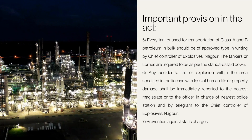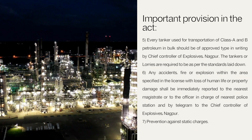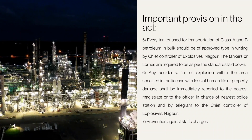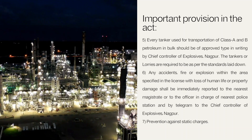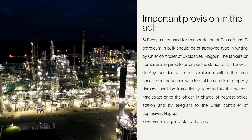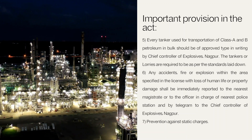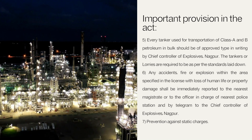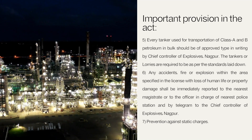Point B is that adequate firefighting facilities with trained personnel are kept ready at the place. The next point is that every tanker used for transportation of Class A and B petroleum in bulk should be of an approved type, approved in writing by the Chief Controller of Explosives, Nagpur. The tankers or lorries are required to meet the standards laid down. Any accident, fire, or explosion within the area specified in the license with loss of human life or property damage shall be immediately reported to the nearest magistrate or the officer in charge of the nearest police station.